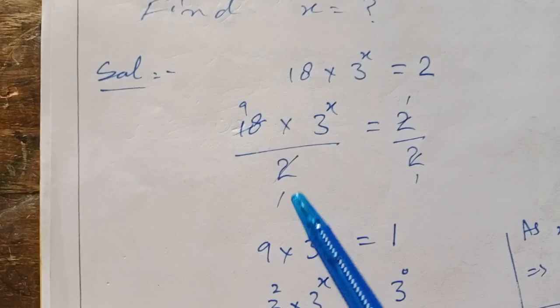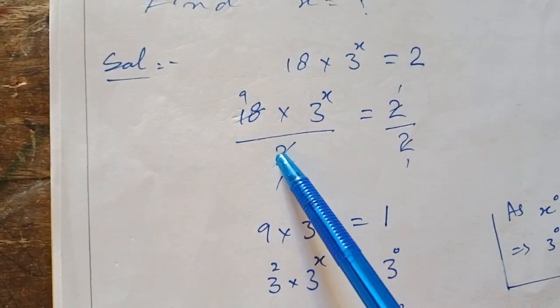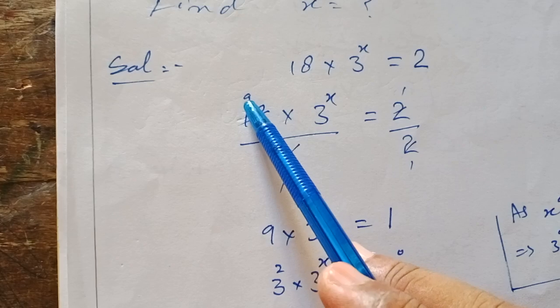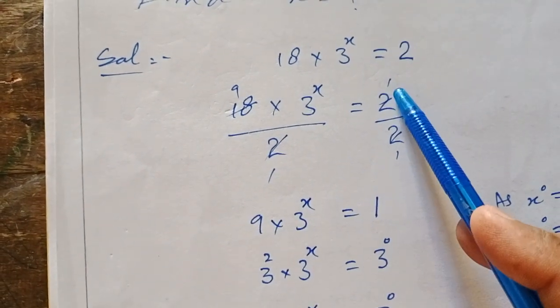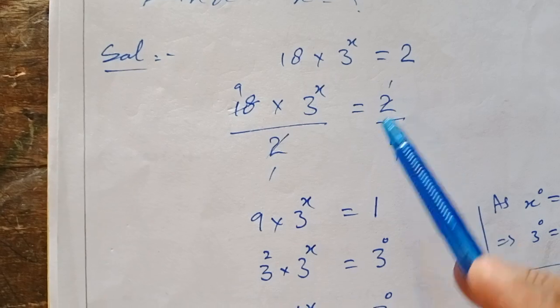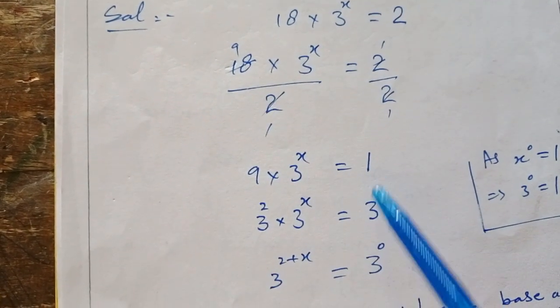We divide both sides by 2. 18 divided by 2 is 9. So 9 multiplied by 3 to the power x is equal to 1.